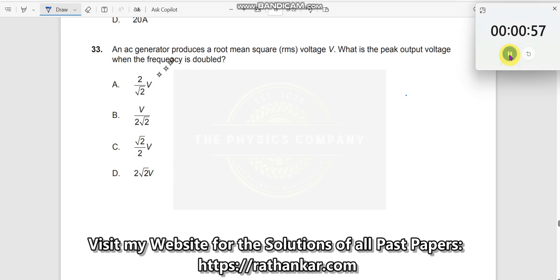Question number 33. An AC generator produces a root mean square voltage V. Let us write VRMS is equal to V. What is the peak output voltage when the frequency is doubled? Peak output voltage is asking.